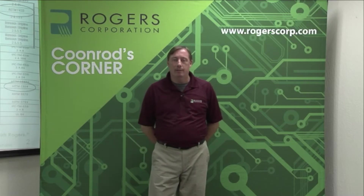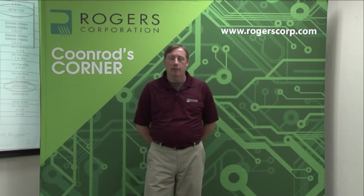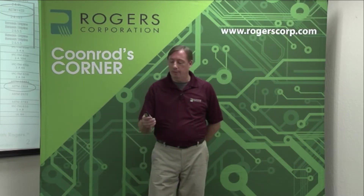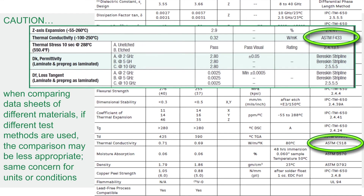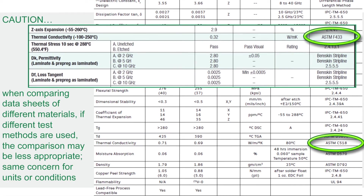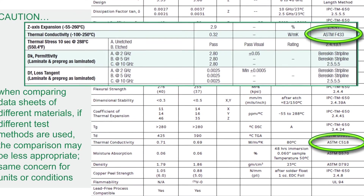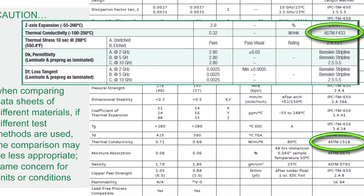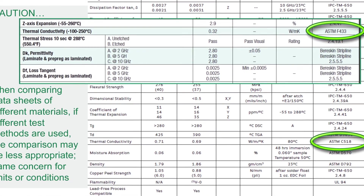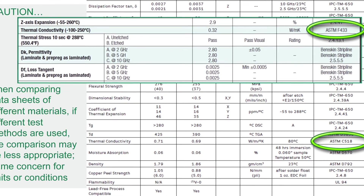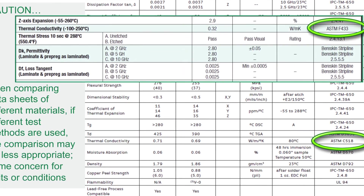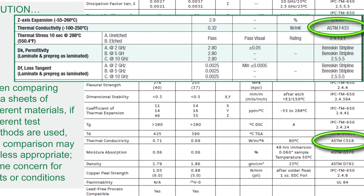One caution I'll mention about data sheets in general: it's pretty common for designers and engineers to compare different materials by the data sheets, and that's fine, but you have to make sure you're comparing apples to apples. Looking at a PowerPoint slide showing different materials — the background data sheet is actually the 4350 material — you can see in the case of thermal conductivity that we have a test method ASTM-C518. Another similar material also reports a thermal conductivity, but a different number using a different test method.